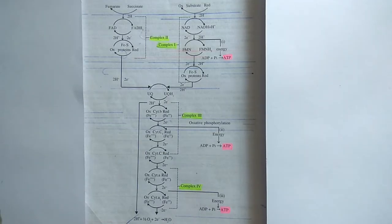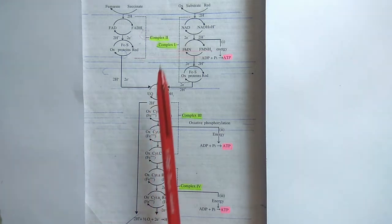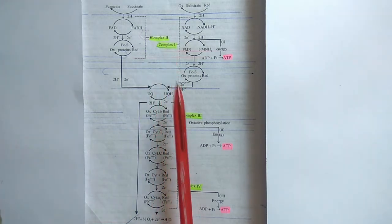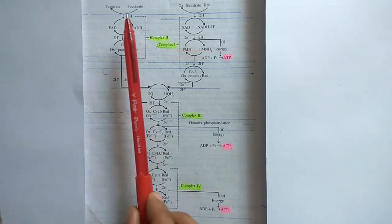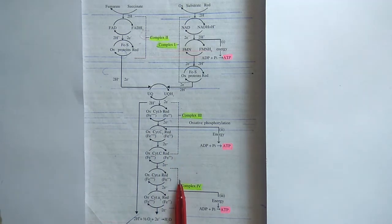On the whole, the combined functioning of complex 1, complex 2, and complex 3 helps transfer electrons from NADH to oxygen, while the combined action of complex 2, complex 3, and complex 4 helps transfer electrons from succinate to oxygen.